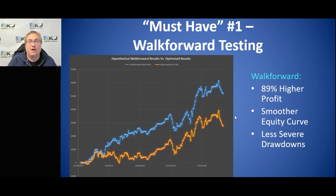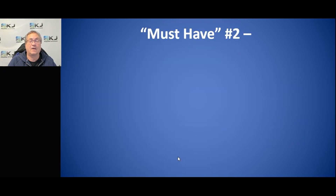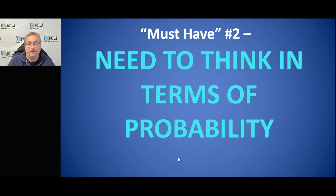The key is you want out-of-sample testing — you don't want an in-sample optimization. An in-sample optimization would look better on the chart, but it would also fall apart in real time. So must-have number one is out-of-sample results; I use walk forward testing to get it. Must-have number two: you need to think in terms of probability. Trading is all about probability.